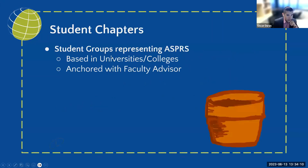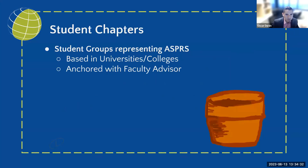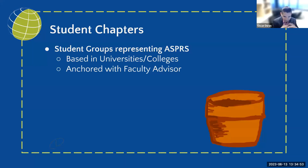Student chapters are student groups that represent ASPRS. They are based in universities, colleges, community colleges, and similar institutions. They are anchored by a faculty advisor — the chapter just needs a faculty advisor to oversee and be the leading person they go to. The faculty advisor also stays in the chapter the longest, since students usually rotate. So we typically maintain continuous communication with the faculty advisor — and by 'we,' I mean ASPRS directly, the national organization.